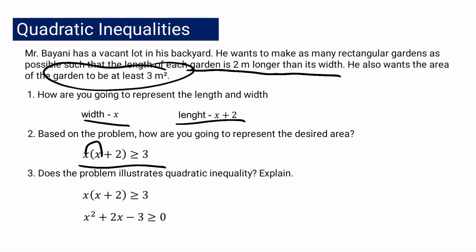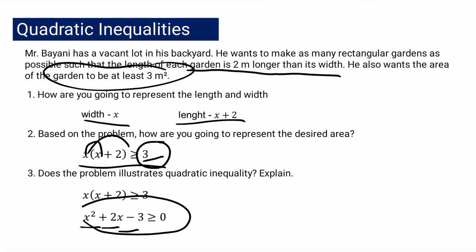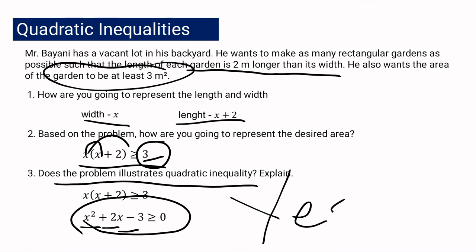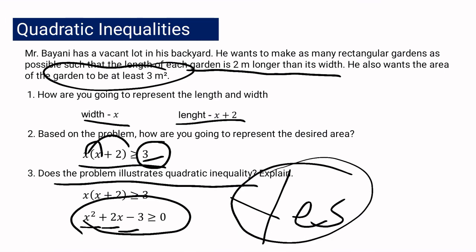Using the distributive property: x times x is x squared, and x times 2 is 2x. Applying the addition property, positive 3 becomes negative 3 on the other side, giving us x squared plus 2x minus 3 is greater than or equal to 0. Based on this resulting inequality, the problem illustrates a quadratic inequality.